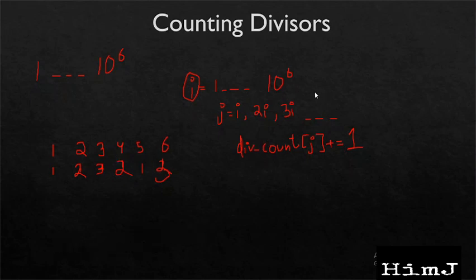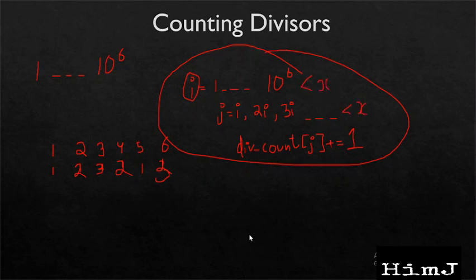Now what will be the time complexity of this approach? Now for some, at a glance the time complexity might look like O(x^2) because each loop is running till x. But let's see, is it really O(x^2)?